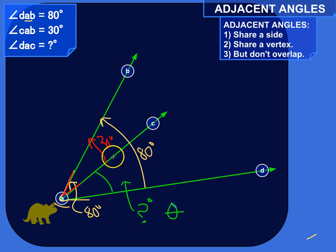They share this side, AC. They share a vertex, A, but they don't overlap. So what that means is, since they share a side, that their two angle measurements will add up to the full angle measurement that includes them.